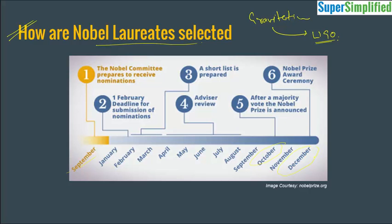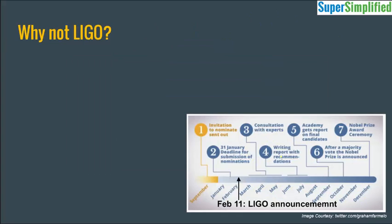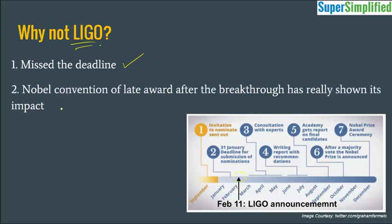The prize distribution ceremony has not yet taken place — I am making this video in October 2016. Now, what happened with LIGO? The LIGO announcement came somewhere in mid-February, and that is why they missed the deadline. That is one of the reasons why LIGO has not received the Nobel Prize this year. Another reason, according to me, could be the Nobel convention of a late award after the breakthrough has really shown its impact in the practical world.